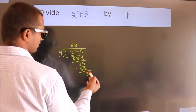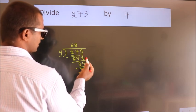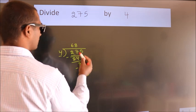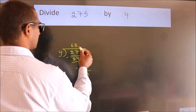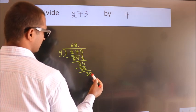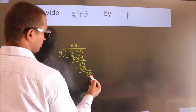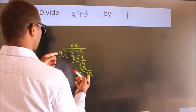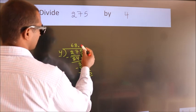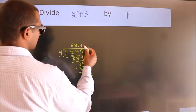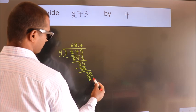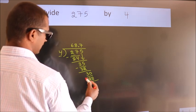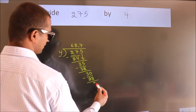After this, there are no more numbers to bring down. So what we do is put a dot and take 0, giving us 30. A number close to 30 in the 4 times table is 4×7 = 28. Now we subtract and we get 2.